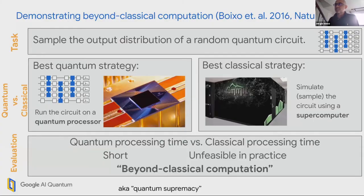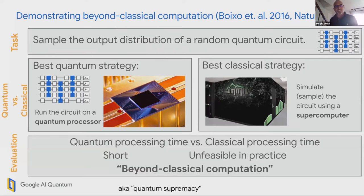I'm going to start by talking about the beyond-classical computation demonstration that we published in 2019. We also used to call it quantum supremacy; we tend to call it beyond-classical computation now. The theoretical proposal for this particular demonstration is random circuit sampling, which we proposed in 2016. The idea is straightforward: given that we're interested in eventually building a full fault-tolerant quantum computer with superconducting qubits, we implement quantum circuits and try to make them hard to simulate by making the gates random. That's basically random circuit sampling — sort of the Hello World program for universal quantum computers.